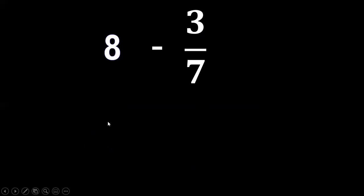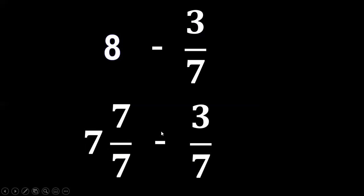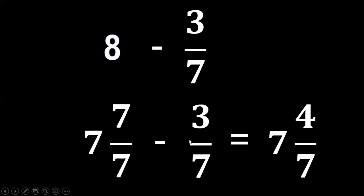So the new minuend is seven and seven over seven. Copy minus three-sevenths. Subtract the whole number: seven minus zero equals seven. Subtract the numerator: seven minus three equals four, and copy the denominator seven. So the final answer is seven and four-sevenths.